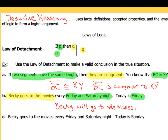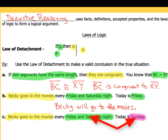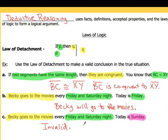In example C, I want to show what one looks like when we would not be able to apply the law of detachment. It's almost the same setup: Friday and Saturday night is our hypothesis, Becky going to the movies is our conclusion. But here I'm told that today is Sunday — and that's not Friday or Saturday night. When we can't come up with a conclusion using the law of detachment, we can't use it. A lot of times books will just say invalid. That's a quick overview of the law of detachment.